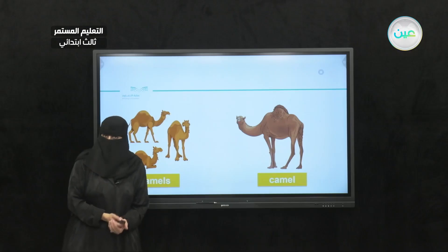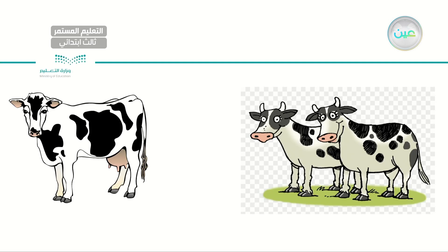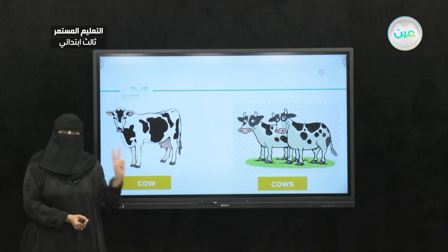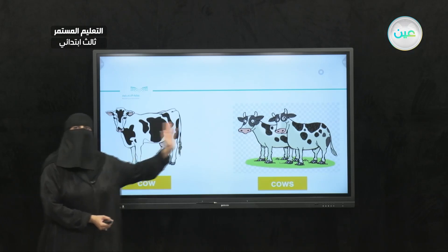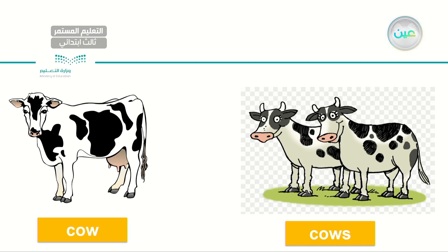Let's have another one. Same — I have singular and I have plural. To your left, I have a cow — that's singular, one cow. While on your right, I have two cows. So let's read together: a cow. Cows. Very good. Excellent.